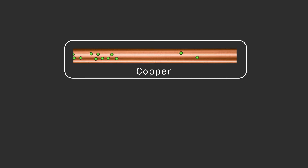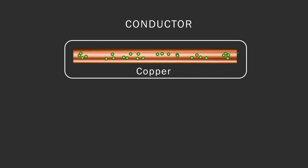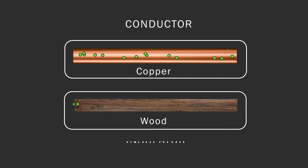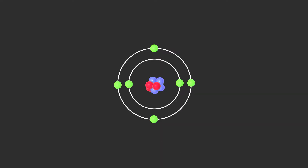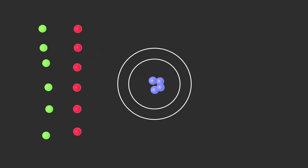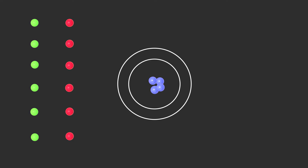Materials that allow many electrons to move freely are called conductors, and materials that allow few free electrons to move are called insulators. All matters are made up of atoms that have electric charges. For matter that has a balanced number of protons and electrons, positive charge force and negative charge force are balanced. This is called the neutral state of an atom.